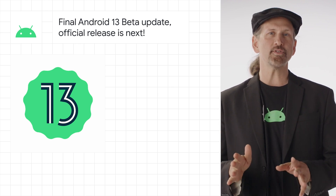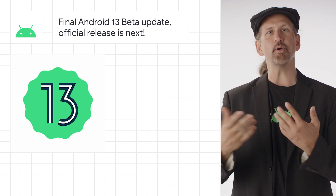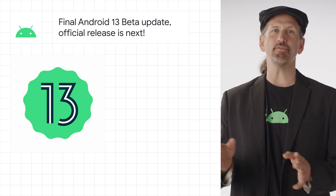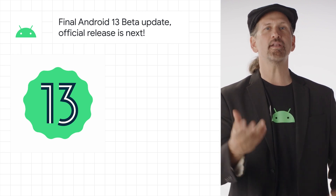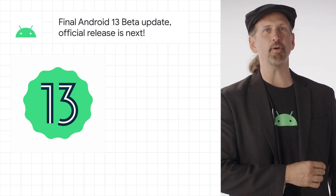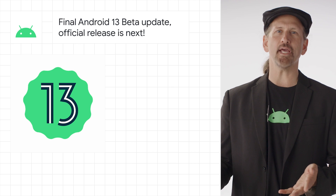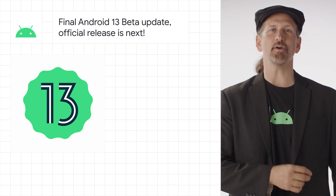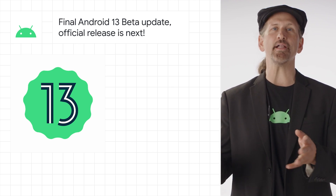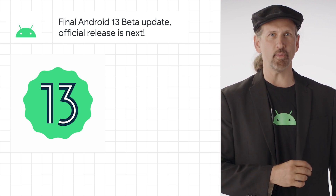Android 13 includes privacy features like the new notification permission and photo picker, productivity features like themed app icons and per-app language support, and modern standards like HDR video, Bluetooth LE audio, and MIDI 2.0 over USB.